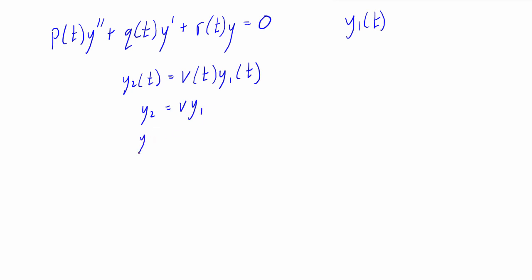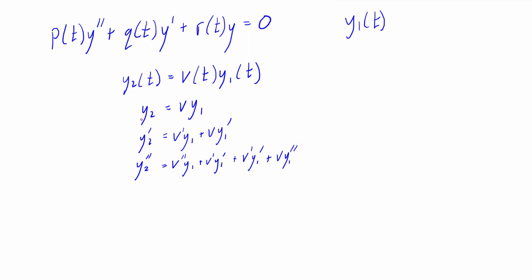What we want to do is take the derivative of y2, so y2 prime — using the product rule we get v prime y1 plus v times y1 prime. Then we take the second derivative, y2 double prime, applying the product rule to each term, giving us v double prime y1 plus v prime y1 prime, and then v prime y1 prime plus v times y1 double prime.